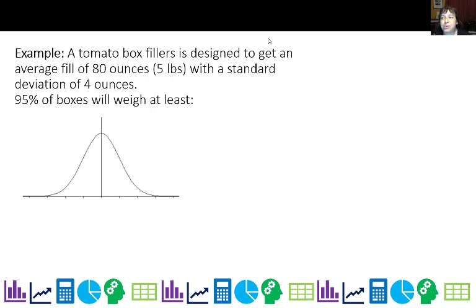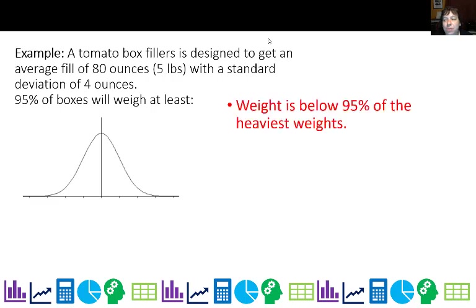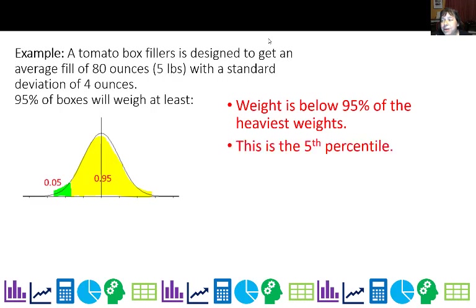Now we have a tomato box filler designed to get an average fill of 80 ounces — my dad actually designed tomato box fillers, so this one's for him — with a standard deviation of 4 ounces. What will 95% of boxes weigh at least? That means I'm looking for the cutoff weight below 95% of the weights. That's actually the 5th percentile, so I'm going to look up 0.05 in the table.